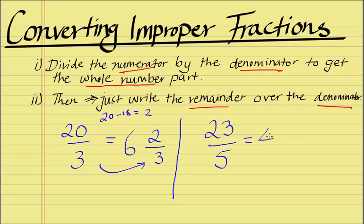4 5s are 20. So you can go 4 times. 4 5s are 20. So if we deduct 20 from 23, what we get is 3. And then we write the remainder over the denominator.